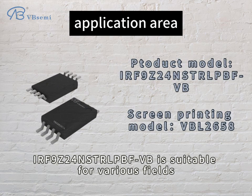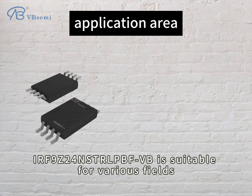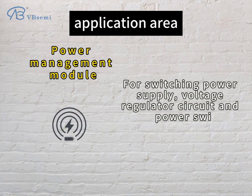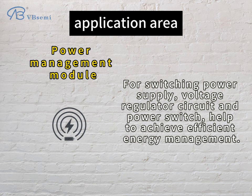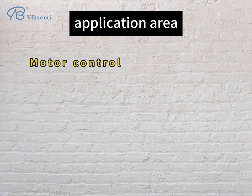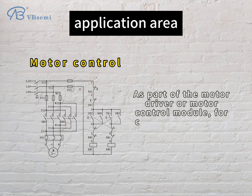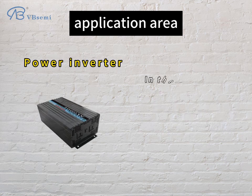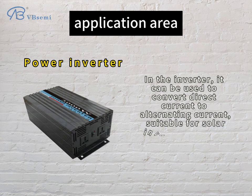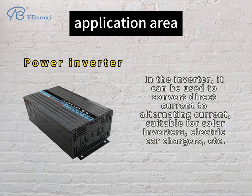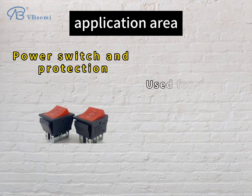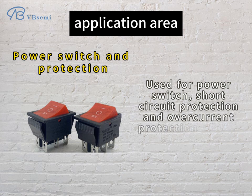Application Area: The IRF9Z24NSTRLPBFVB is suitable for various fields. Power Management Module — switching power supply, voltage regulator circuit, and power switch help to achieve efficient energy management. Motor Control — as part of the motor driver or motor control module for current control and voltage switching. Power Inverter — it can be used to convert direct current to alternating current, suitable for solar inverters, electric car chargers, etc. Power Switch and Protection — used for power switch, short circuit protection, and overcurrent protection circuits.